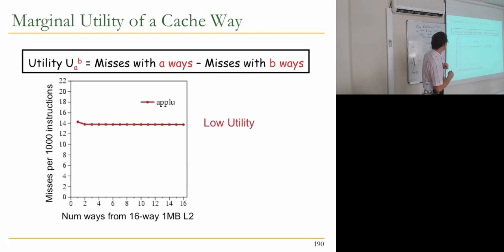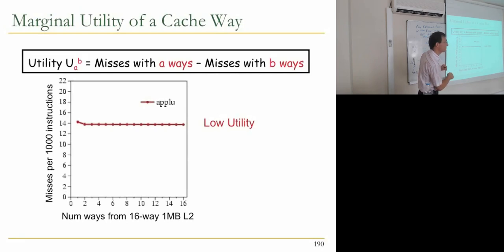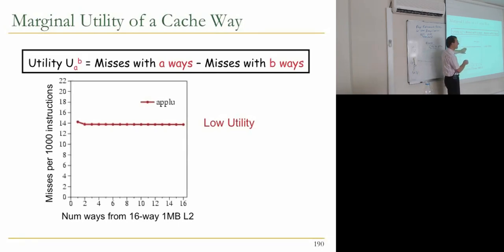Looking at the utility curves: on the x-axis is the number of ways allocated to each application from a 16-way, one megabyte L2 cache, and on the y-axis is the miss rate in misses per 1,000 instructions. This application is a streaming application and it actually doesn't benefit from more caching — as you increase the cache size allocated to it, its miss rate doesn't change.